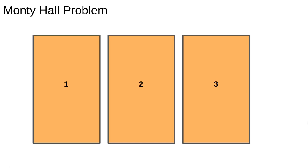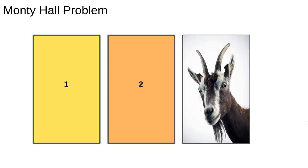The setup is simple: there are three doors and behind one is a prize, behind the other two are goats. Assuming you don't want to win a goat, you want to pick the door with the prize behind it. So first you pick a door, let's say door number one, and then after choosing door number one the host, Mr. Monty Hall, opens one of the other doors revealing a goat. So now you can stick with your original choice or switch — so what should you do?